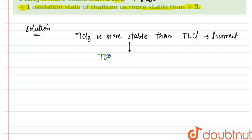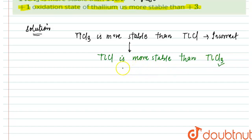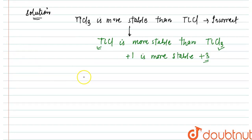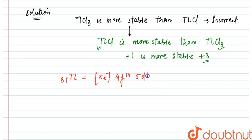Actually, thallium chloride (TlCl) is more stable than thallium trichloride (TlCl3). To understand the reason behind this, we need to understand that the plus one oxidation state of thallium is more stable than the plus three state. To understand why, we need to look at the electronic configuration of thallium, which has atomic number 81. Its electronic configuration is: [Xe] 4f14, 5d10, 6s2, 6p1.